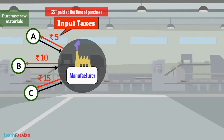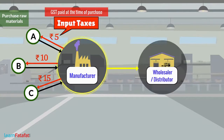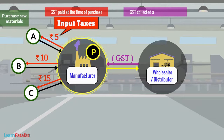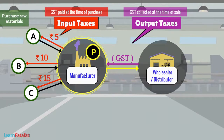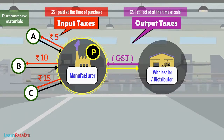Similarly, when the trader sells goods, he also collects GST from the buyer. The GST collected at the time of sale is called output tax. For example, the manufacturer produces product P from raw materials A, B, and C. While selling, the manufacturer collects GST of Rs.40.